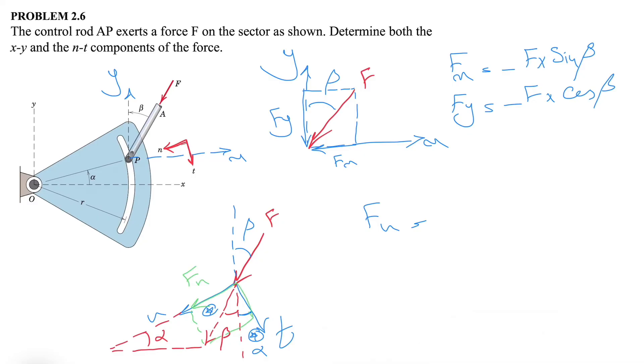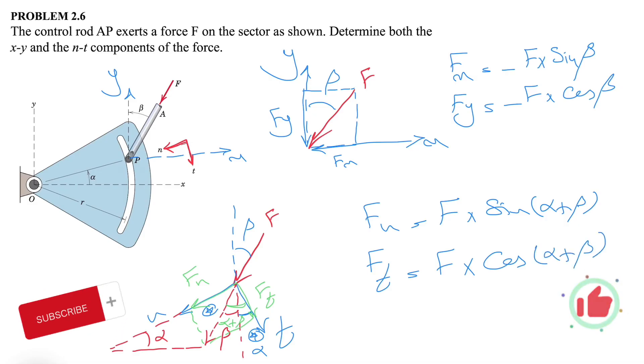Basically what we have in here, this will be our Fn and this will be our Ft. We know this angle is alpha plus beta. In this case our Fn simply will be F times sine of alpha plus beta, and our Ft will be F times cosine of alpha plus beta.